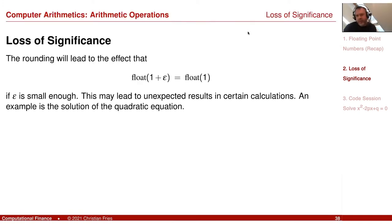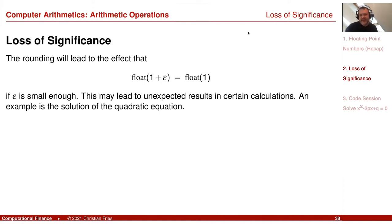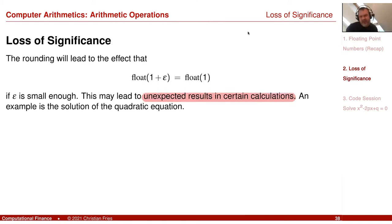The root of all evil is that we have discovered that there is a number epsilon such that one plus epsilon, rounded to the next floating point number, is the floating point number that represents one — the equivalence class that corresponds to one. This may lead to unexpected results in certain calculations.